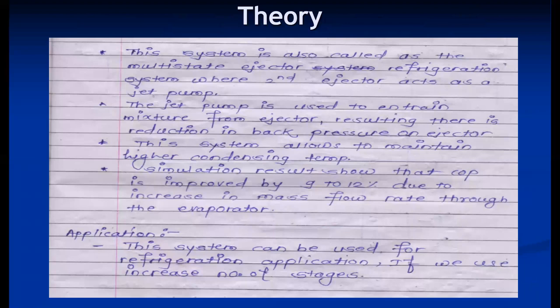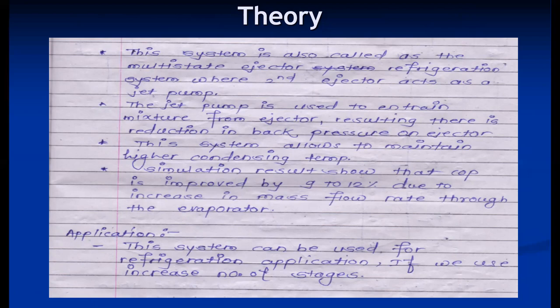This system can be used for refrigeration applications by increasing the number of ejector stages. The normal ejector refrigeration system is suitable for air conditioning applications, but with staging it can be extended to refrigeration. Main applications are for higher condensing temperature and refrigeration. With the jet pump, the entrainment ratio is increased, improving the COP by around 9 to 12 percent due to the increase in mass flow rate in the evaporator.